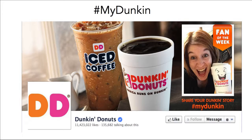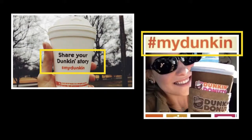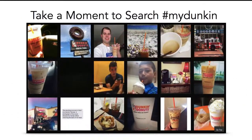What does Dunkin' want as the end game? They want audience, buyers, user-generated content. If you're drinking your coffee on the beach, at work, or in the car and you're tagging it, they're building a storyboard. If you've got a couple months' worth of people using hashtag my Dunkin' and you search it, you'll see all those people in all different locations — a storyboard of that search. It's content they didn't have to create. It's people using the product.